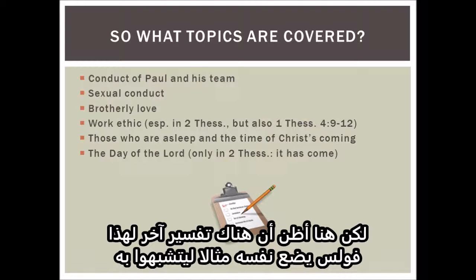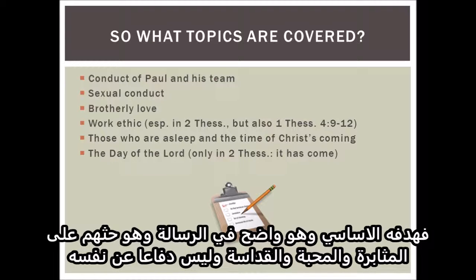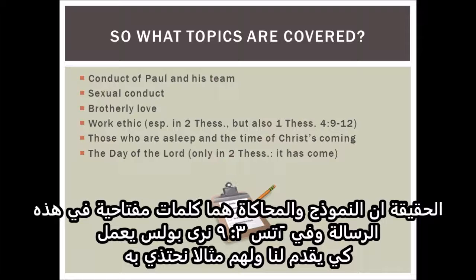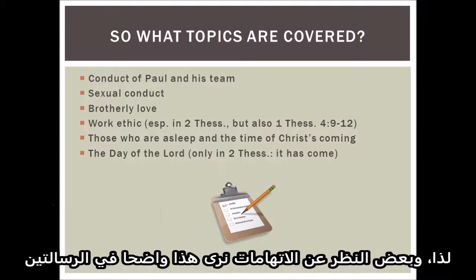Paul is setting himself up as an example to imitate. His real aim — and this is quite explicit in the letter — is to promote perseverance, love, and holiness, not to defend. Paul and his companions are an example of steadfastness in the face of opposition, of love and care, and of working for their own needs. Paul wants the Thessalonians to do the same. Example and imitation are key terms in these letters. In 2nd Thessalonians 3:9, Paul worked to give 'in ourselves an example to imitate.' Different from any accusations, all of this is quite explicit in both letters.